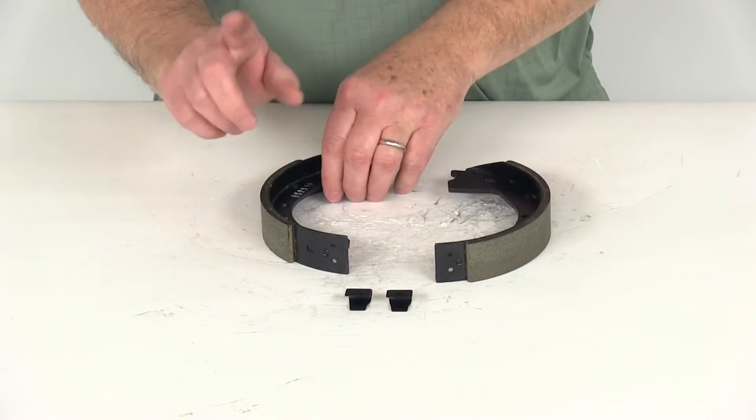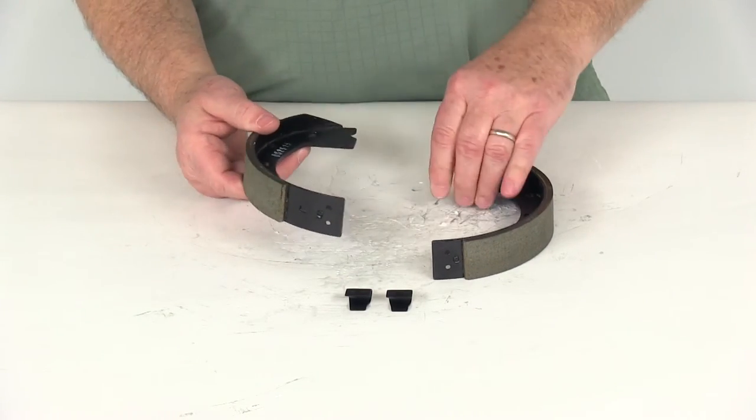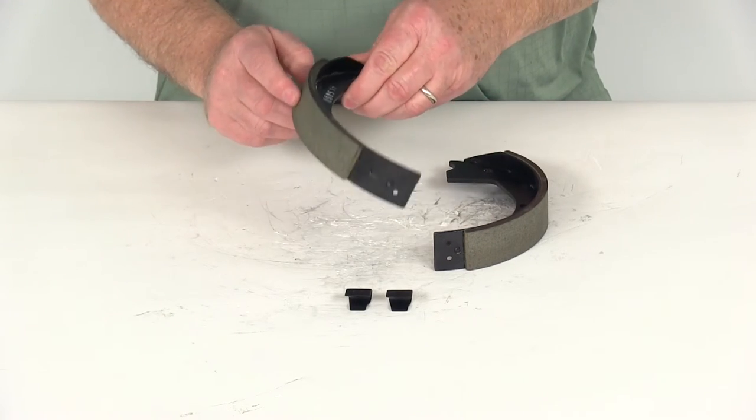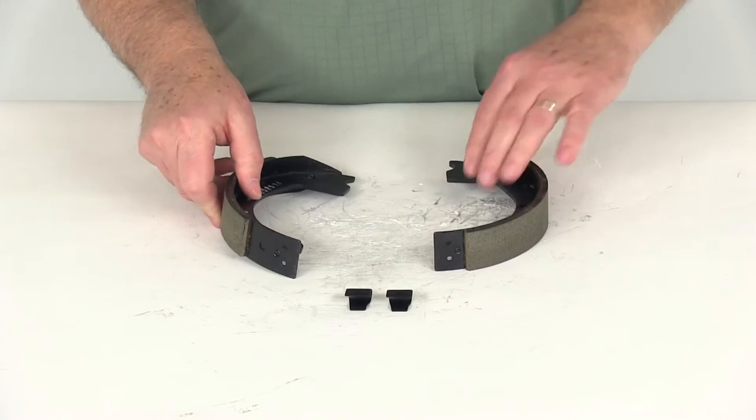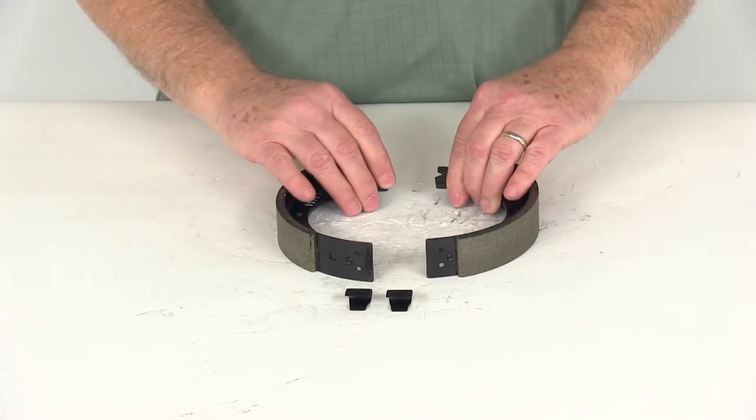The primary shoe always points towards the front of the trailer. When you install these, make sure the primary shoe goes towards the front of the trailer, and the secondary shoe, which is the larger one, points towards the rear of the trailer.